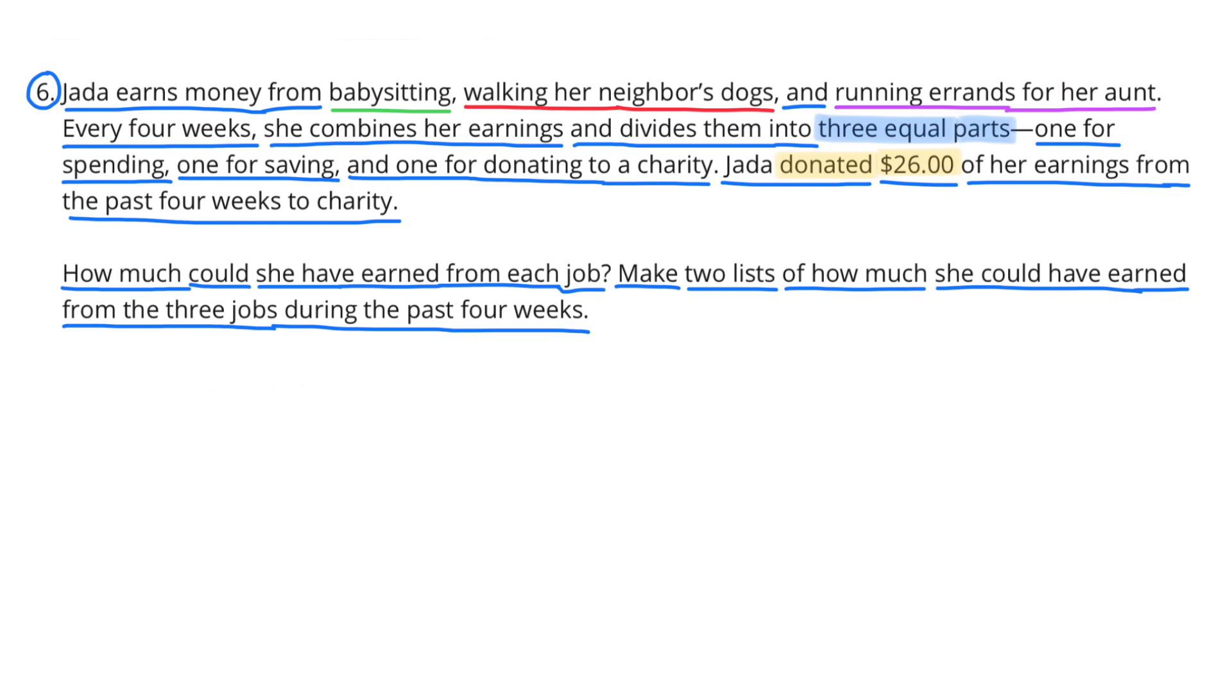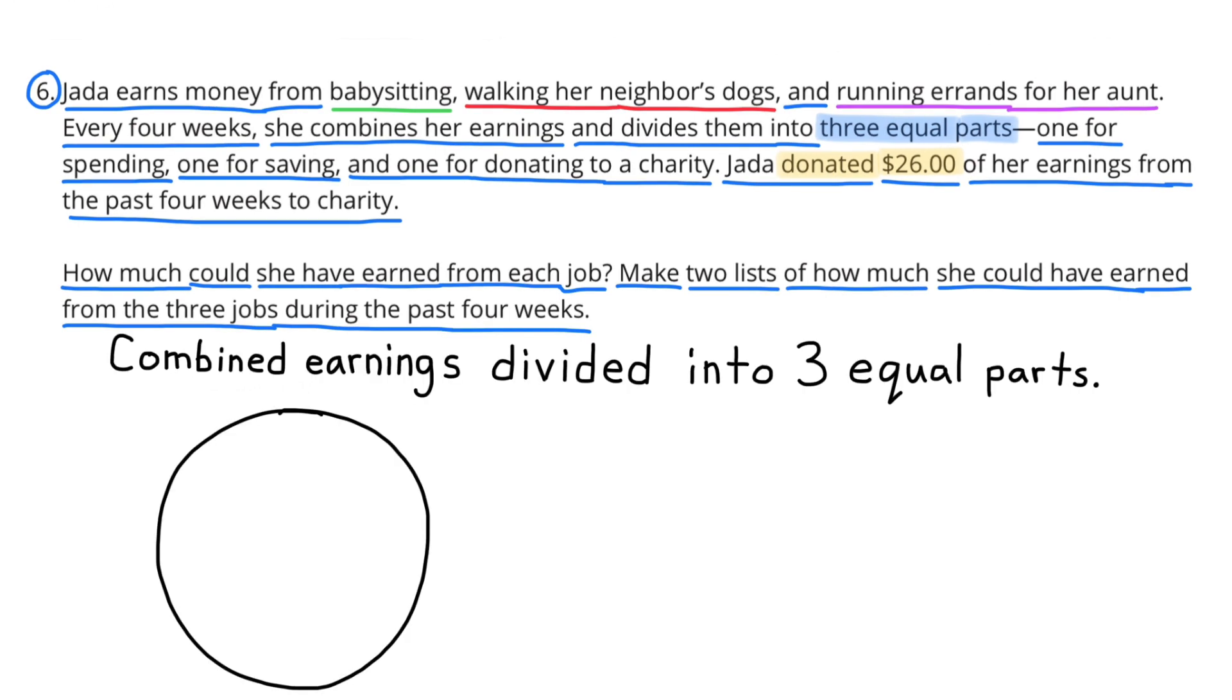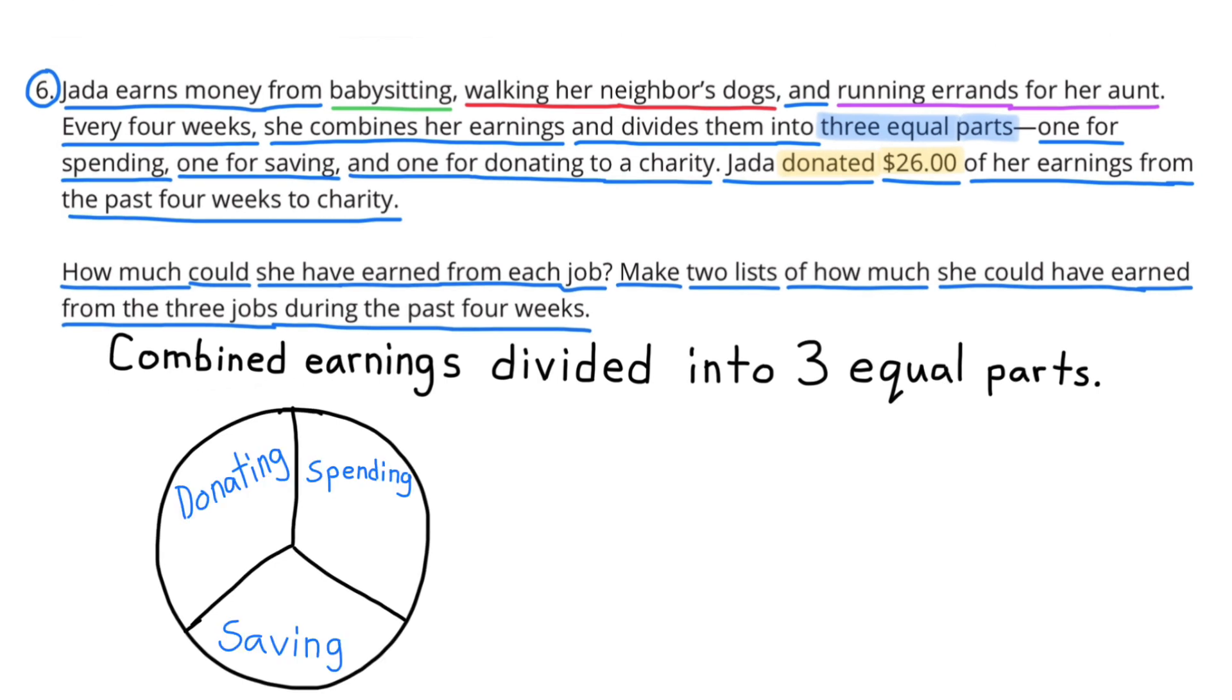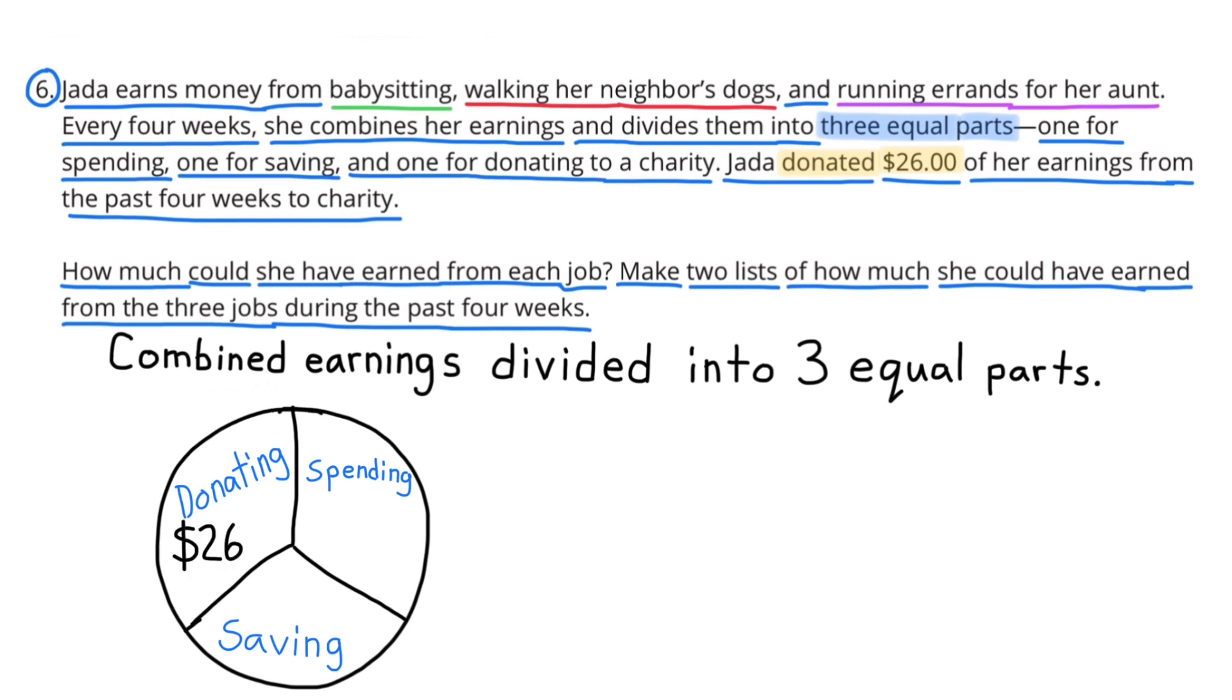If you need to, press pause and give it a try. I've drawn this circle to represent her combined earnings. After she combines her earnings, she divides them into three equal parts. These three equal parts are spending, saving, and donating.